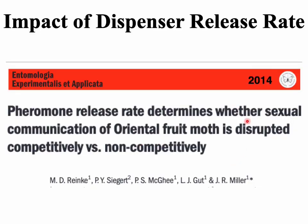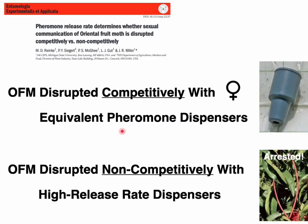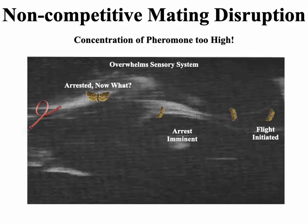A 2014 paper by Mike Renke and colleagues at Michigan State University, 'Pheromone Release Rate Determines Whether Sexual Communication of Oriental Fruit Moth is Disrupted Competitively or Non-Competitively,' concluded that OFM is disrupted competitively with female-equivalent pheromone dispensers. If you put out 400 lures per acre, the release rate is roughly equivalent to a female OFM, so disruption is competitive. But with high-releasing hand-applied dispensers, OFM is disrupted non-competitively — the males get arrested in flight and cannot complete locating the female.